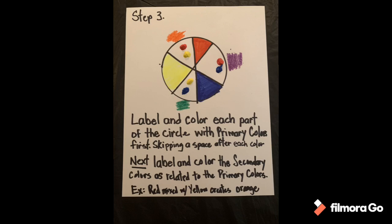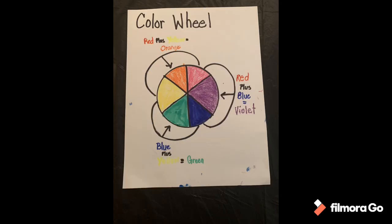Great job, students! Let's review: red plus yellow equals orange, red plus blue equals purple/violet, and blue plus yellow equals green. Congratulations, you created a color wheel!